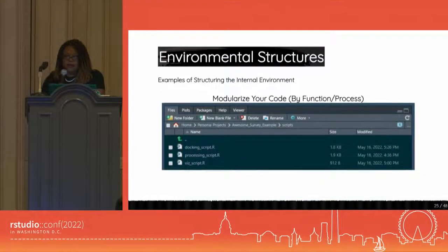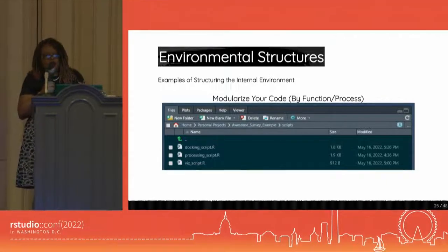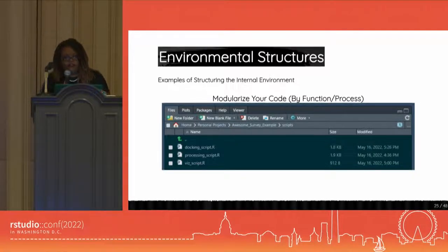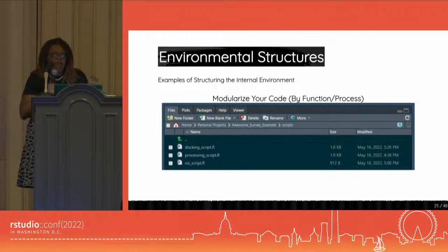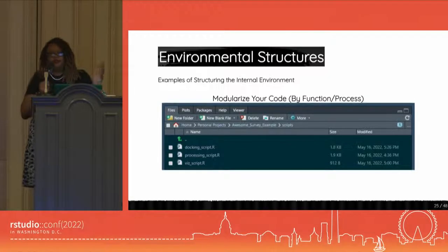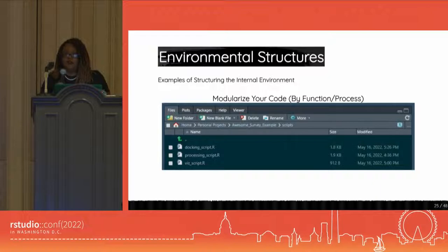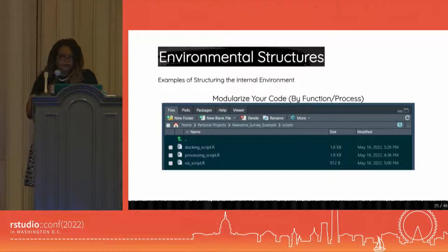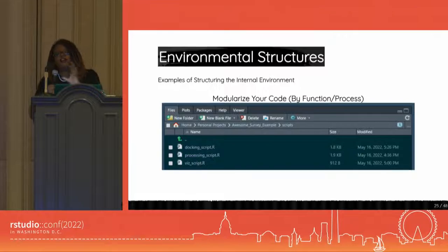Another way you can also do it is modulizing your code by function or by process. I usually do this when I don't have too many data sources and I have a more manageable project. In this example, I'm showing three scripts in my working directory: a docking script, a processing script which is just for doing transformations and cleaning, and a visualization script which is literally just making visualizations. What helped me was having individual scripts that I could call on when it was time to use them in the pipeline.